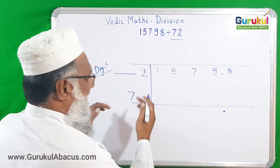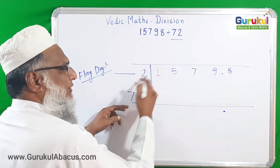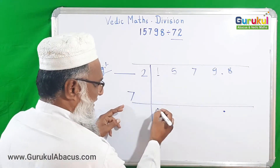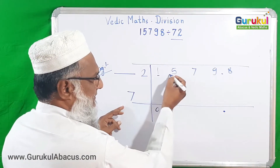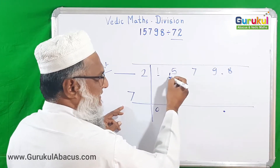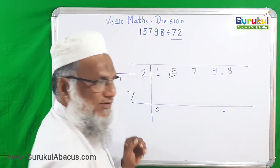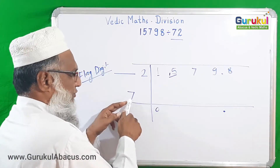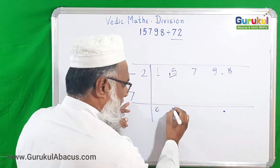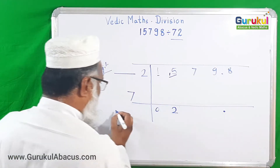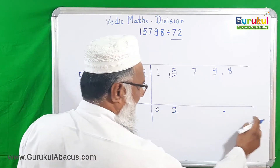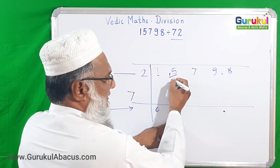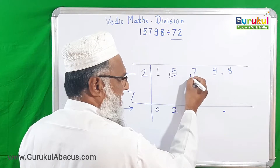We are dividing only by 7. The first digit is 1, which is smaller than 7, so we say 7 zeros are 0, and this 1 is added to the next digit, making it 15. Now dividing 15 by 7: 7 twos are 14. From 15 we subtract 14, so remaining is just 1. That 1 I am writing, and with the next digit 7 it becomes 17.